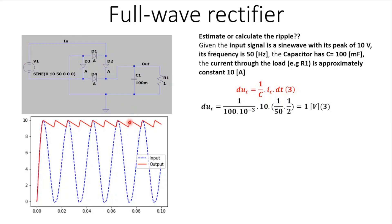This is the charging process during the negative half period of the input signal. Again, the voltage on the capacitor is charged up to the peak voltage of 10 volts, and when it reaches that peak the circuit switches back to the discharging process involving only the capacitor and the load. The circuit then repeats.